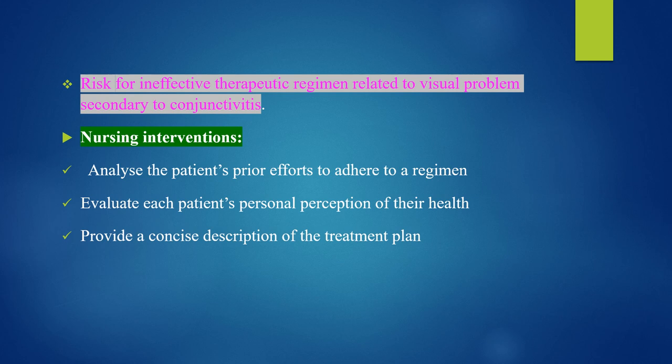Nursing diagnosis 5: Risk for ineffective therapeutic regimen management related to visual problems secondary to conjunctivitis. Interventions: Analyze the patient's prior efforts to adhere to a regimen, evaluate each patient's personal perception of their health, and provide a concise description of the treatment plan.